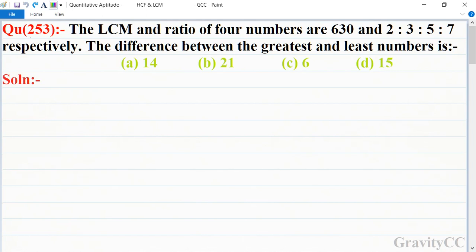Chapter HCF and LCM, question number 253. The LCM and ratio of four numbers are 630 and 2:3:5:7 respectively. The difference between the greatest and least number is—in this question, it's given that LCM is 630 and the ratio of four numbers is 2:3:5:7.